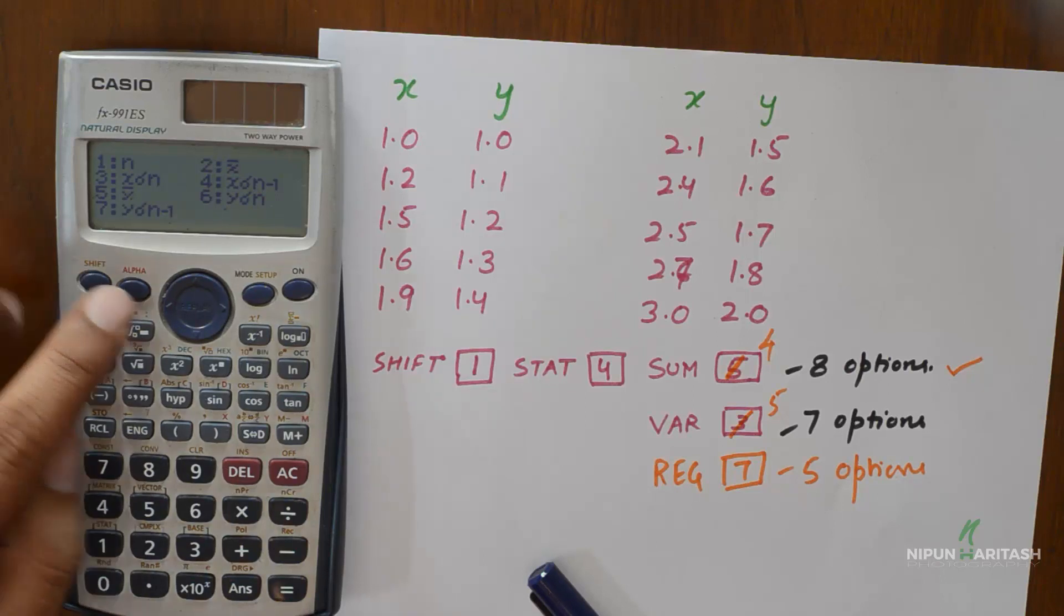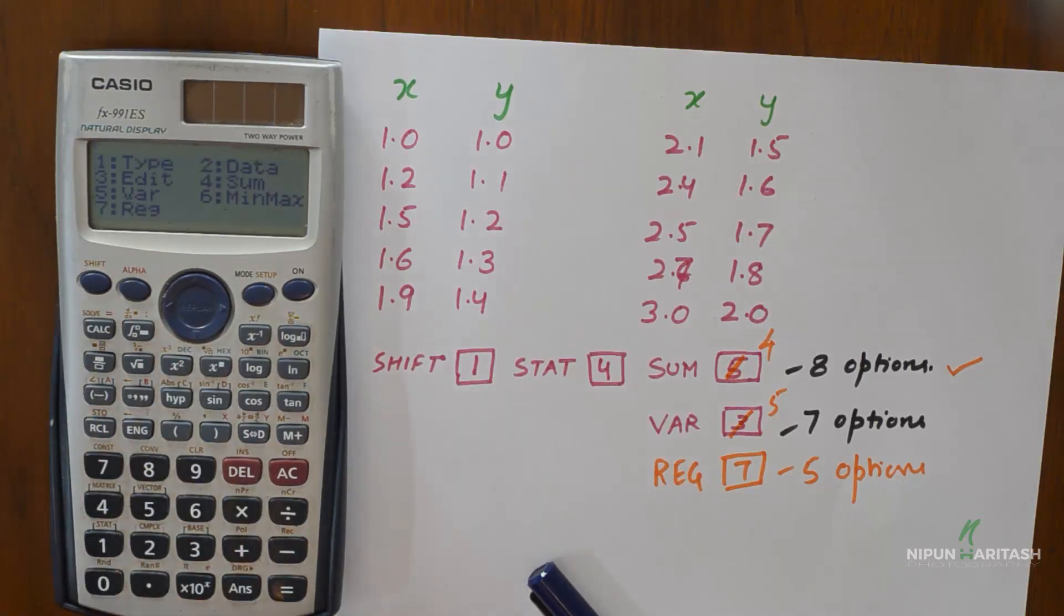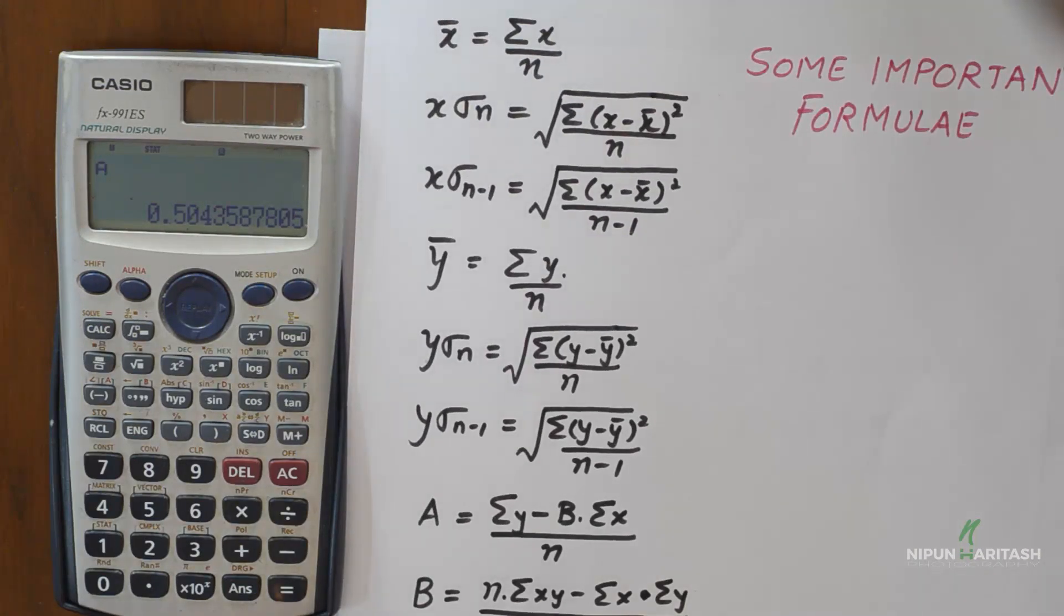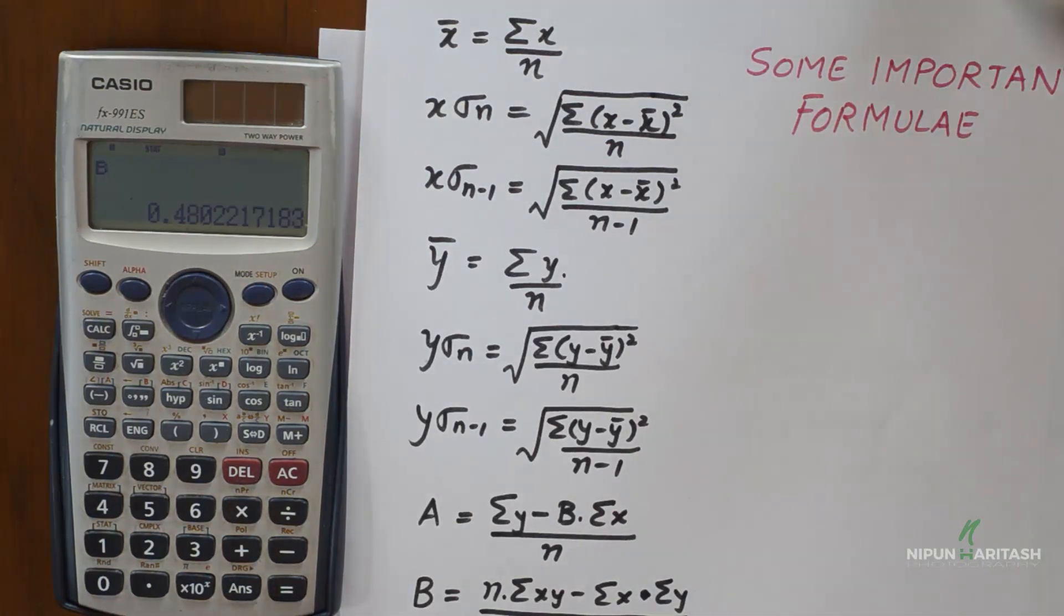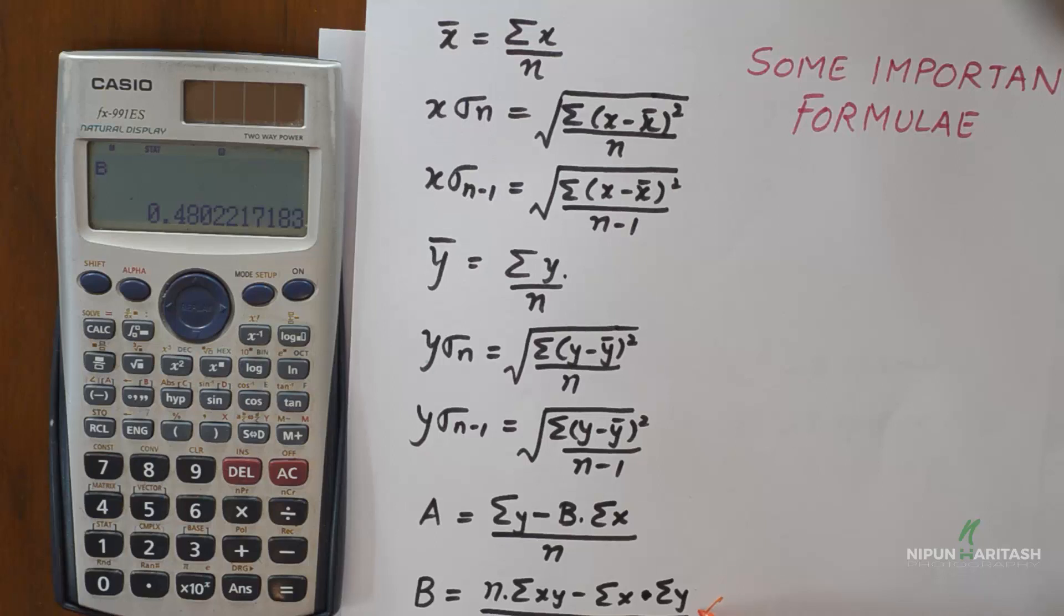So we will be using, we go to shift then we go to stat and we need to use the option 4, 5 and 7 to get 8, 7 and 5 sub options respectively. So I will go ahead with the option 7 and then I will select option 1 which is for the calculation of a and it gives me the value of a which otherwise seems pretty tough to calculate as seen from the formula. Similarly we can go back to selecting option B. It gives me the value of B as 0.480 which is otherwise very very tough to calculate manually.